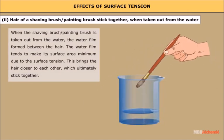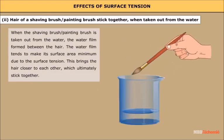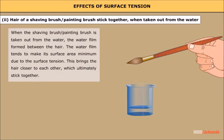Number two: hair of a shaving brush or painting brush stick together when taken out of water. When the brush is taken out from water, a water film forms between the hairs. This water film tends to make its surface area minimum due to surface tension, bringing the hairs closer to each other until they ultimately stick together.